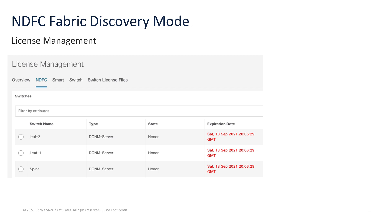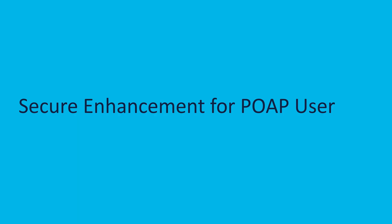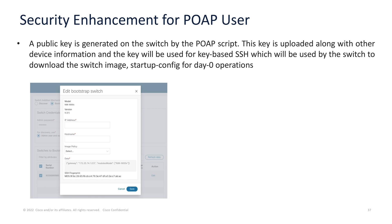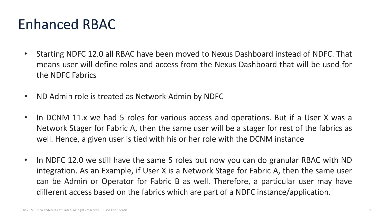We also have a security enhancement for POAP users. In DCNM 11.x, the switch downloads the POAP script from DCNM via TFTP, and that script contains the SCP credentials for downloading additional files — this can pose a security problem where anyone could download the final config for another switch. In NDFC, a public key is generated on the switch and uploaded along with other device information. This key is used for key-based SSH, allowing the switch to securely download the image and startup config, making it much more secure than DCNM.